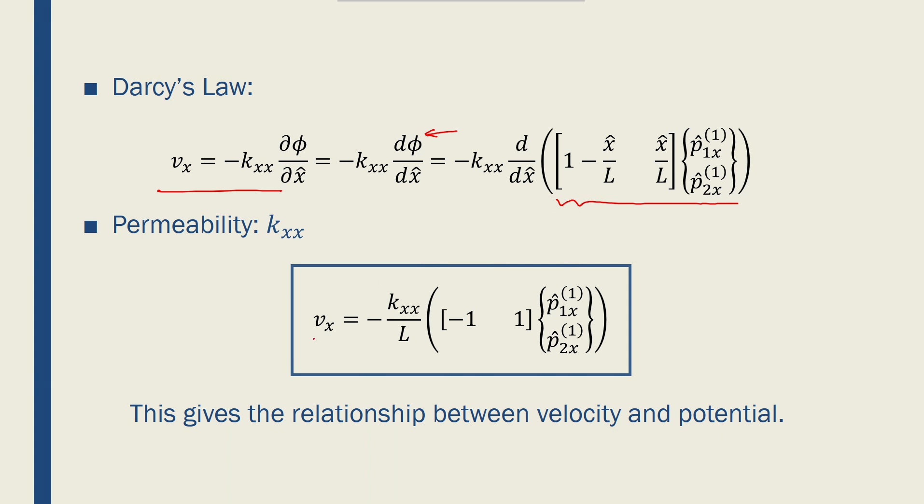And if we do that, we'll find this value relating the nodal velocity, or this would actually be an element. So this would be the element velocity with the potentials, the nodal potentials. We have a 1 by 2 row matrix and we have a 2 by 1 vector.